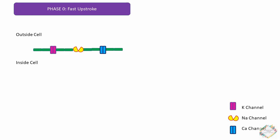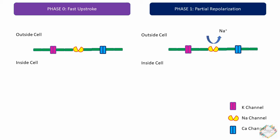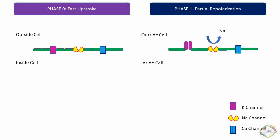In phase 1, partial repolarization, the initial rapid phase is mainly due to the inactivation of the sodium channel. During repolarization, potassium channels get opened with an outward movement of potassium. This is followed by the rapid opening and closing of potassium channels, causing a transient outward current.